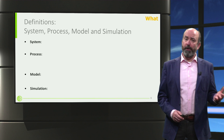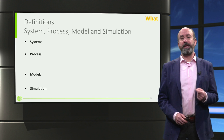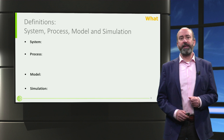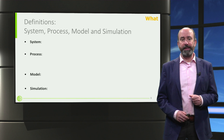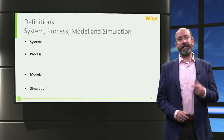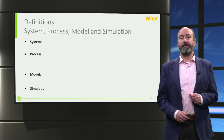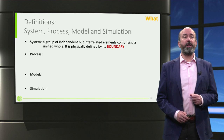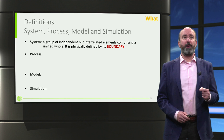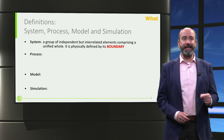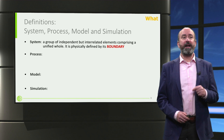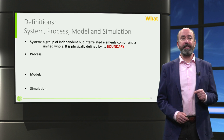Now, before we start, I need to tell you some definitions. Definitions are a little bit boring, but bear with me — I will read them out loud and comment on them so that they become clearer. What is a system? A system is a group of independent but interrelated elements comprising a unified whole.